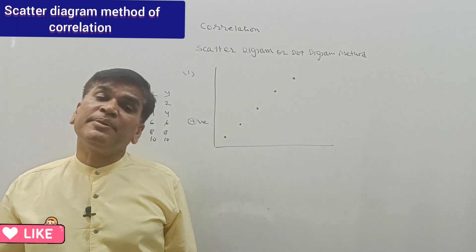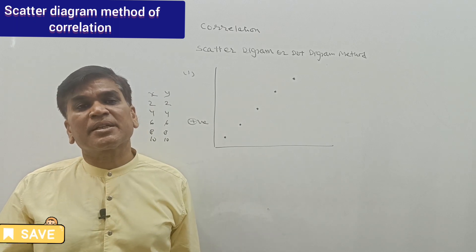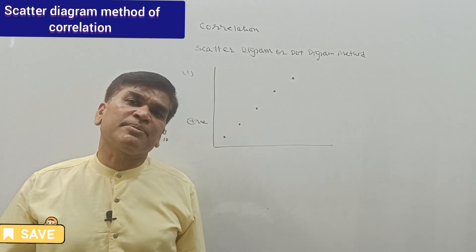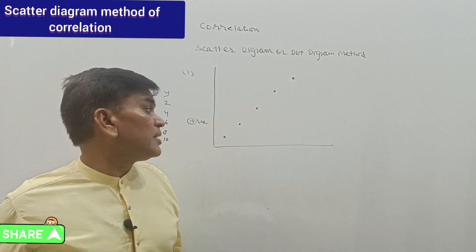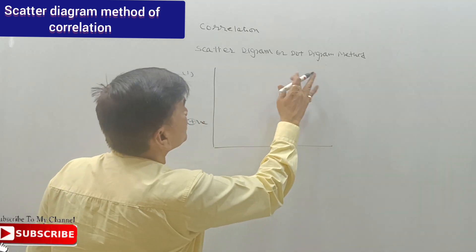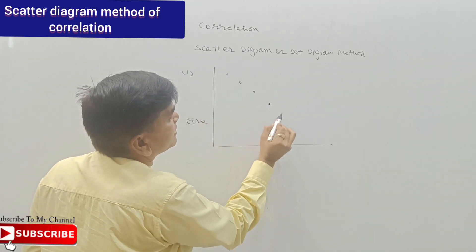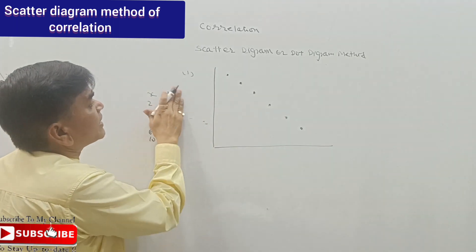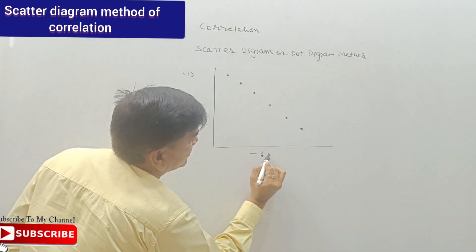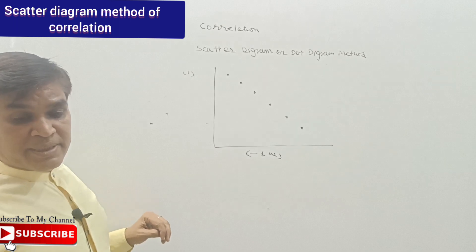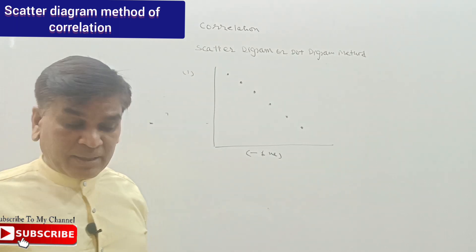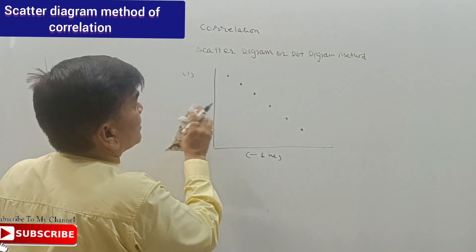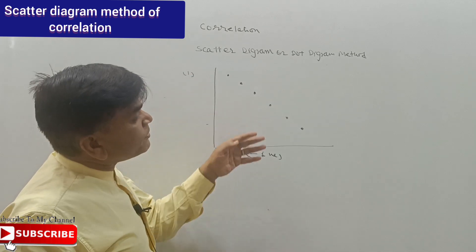So with the help of the dot diagram, if you are calculating correlation, that is called dot correlation. This method is not so important as far as the examination point of view is concerned, so we will not give too much attention to this. If both dots — x series and y series — go in opposite directions equally, we will say it is perfect negative correlation, that is minus 1 correlation.